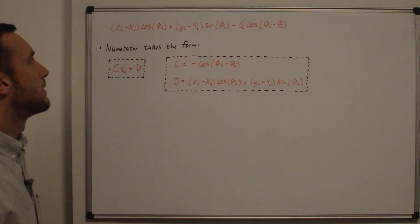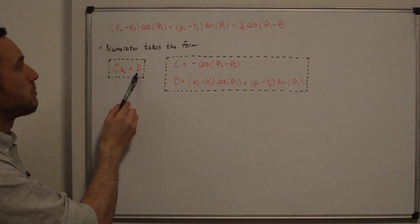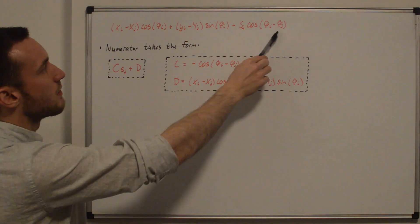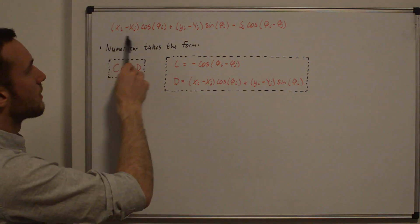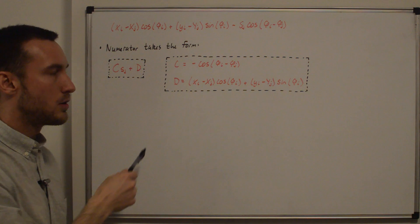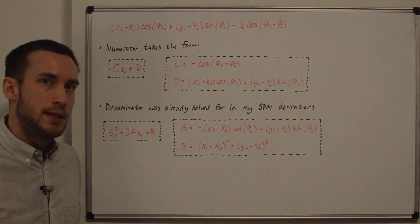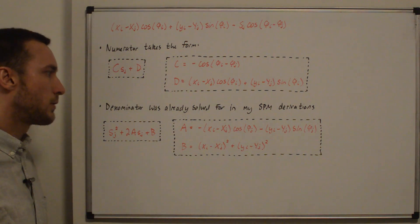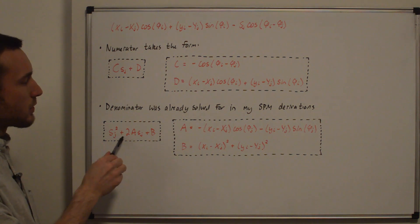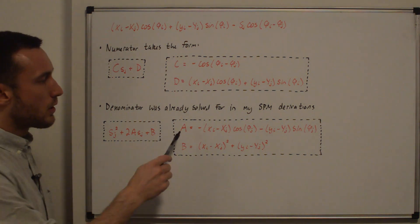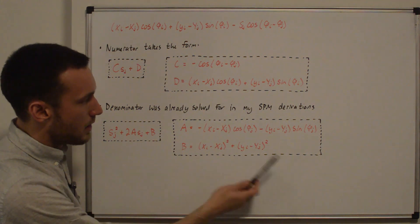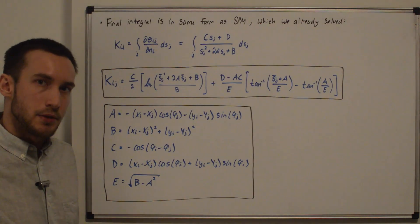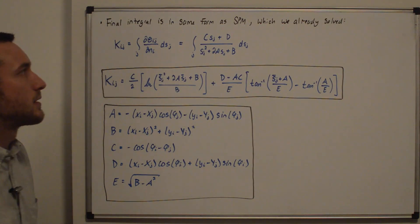The numerator takes the form C·s_j + D, where C = -cos(phi_i - phi_j) and D = (xi - Xj)cos(phi_i) + (yi - Yj)sin(phi_i). The denominator was derived in the source panel method video and takes the form s_j² + 2A·s_j + B, where A and B use phi_j terms. The final integral k_ij has the same form as the source panel method, so we use that result directly.